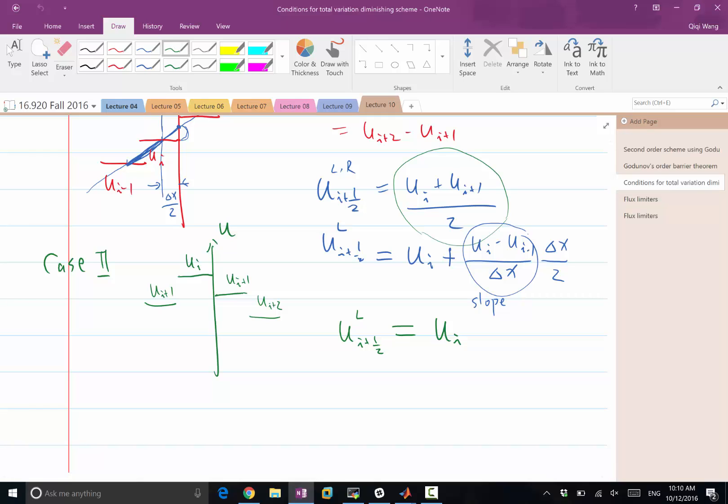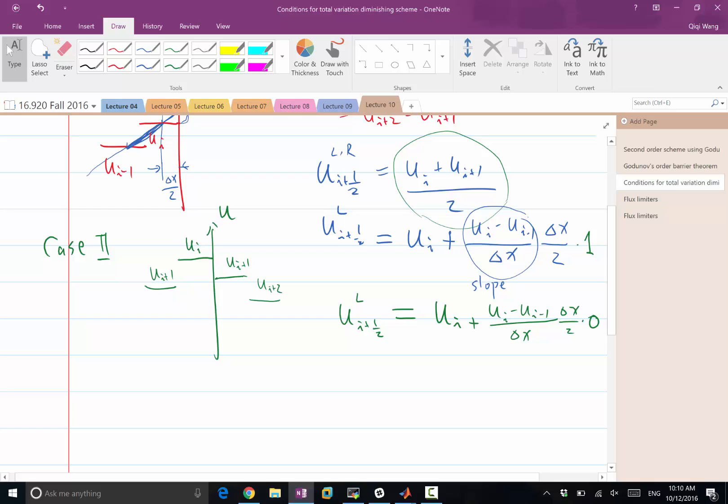So we can write that, we can write the second case as plus the same slope delta x times 0, right? And this is like times 1, right? So this 1 or 0 is like turning on and off a slope indicator.